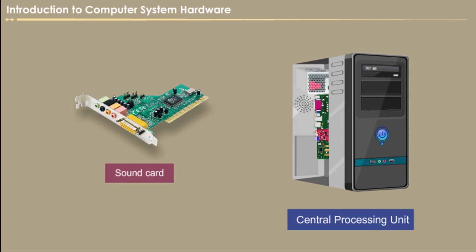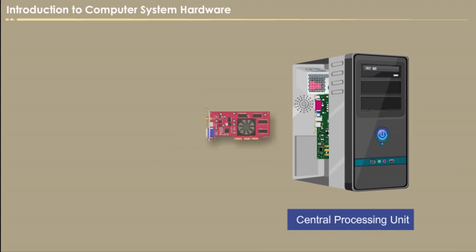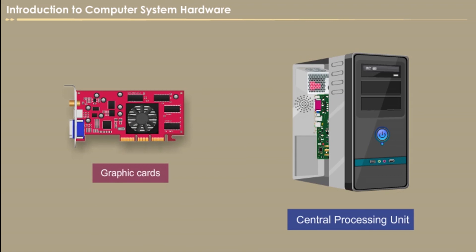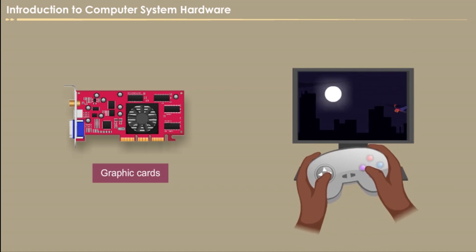Sound card. A sound card converts the digital data to analog sound waves that you can hear. The output signal is then connected to a headphone or a set of speakers. You can also use a sound card to record audio with the help of a microphone. Graphic cards. A graphic card is a type of display adapter or video card installed in computing devices to display graphical data. It contains its own processing unit and memory.